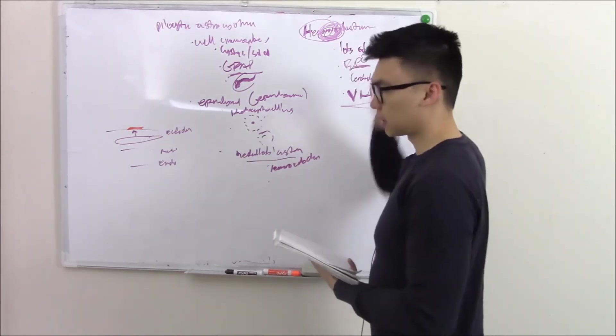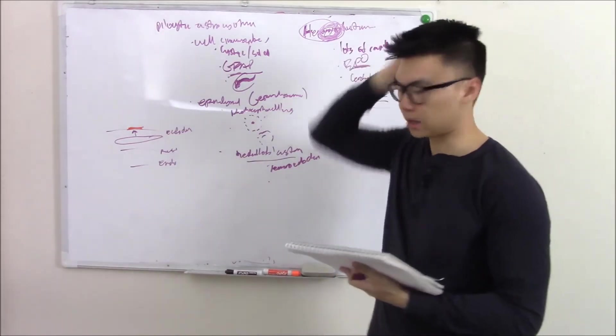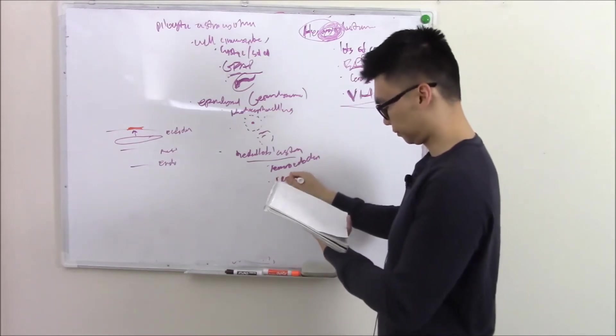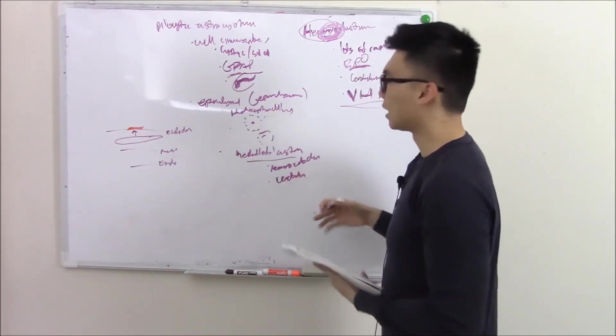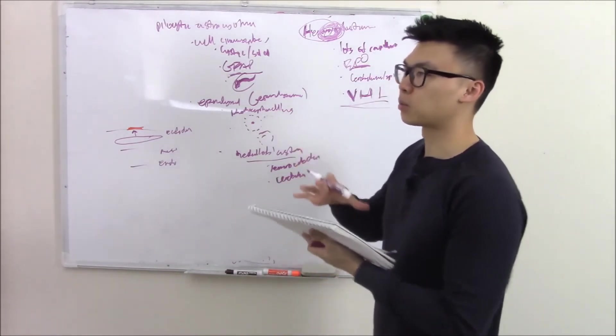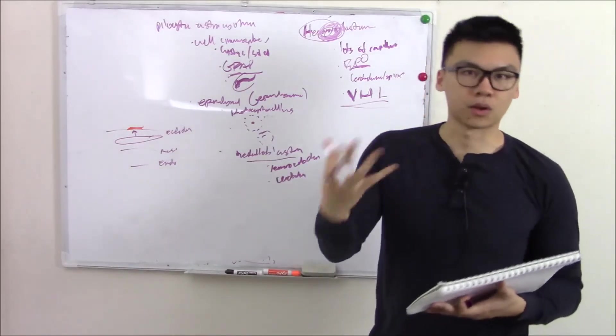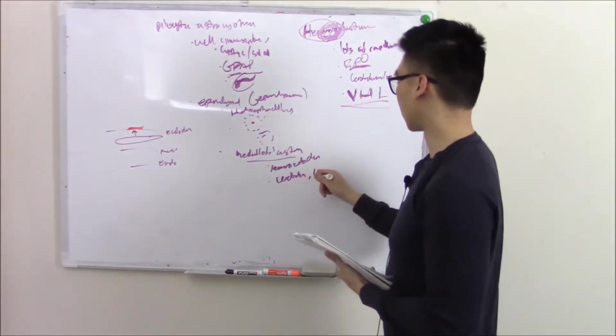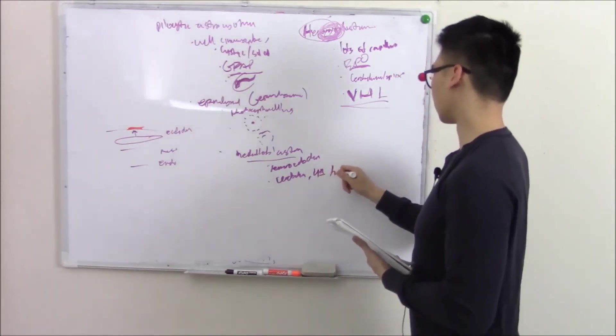Grossly, what does it look like? It likes to really affect your cerebellum. So cerebellum. And it can grow and compress the ventricular system around your cerebellum, especially your fourth ventricle. That causes, as you can imagine, hydrocephalus.